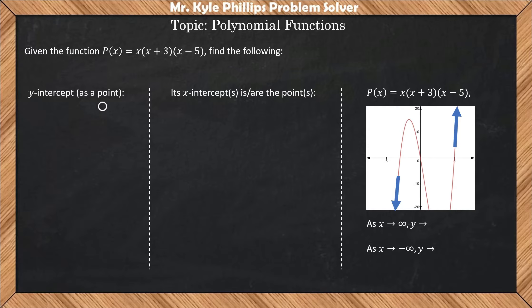In order to find the y-intercept as a point, we will need to make our x value 0, because we know on a coordinate plane that whenever x is 0, that you would have some y value, and that would be the y-intercept.